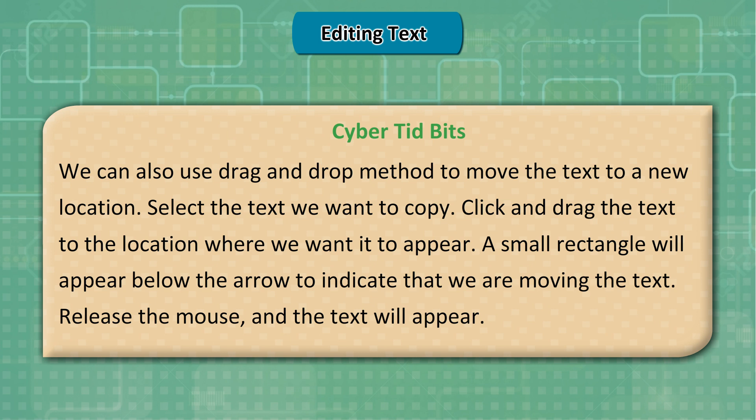We can also use the drag-and-drop method to move text. Select the text, then click and drag it to the new location. A small rectangle will appear below the arrow to indicate that we are moving the text. Release the mouse and the text will appear.